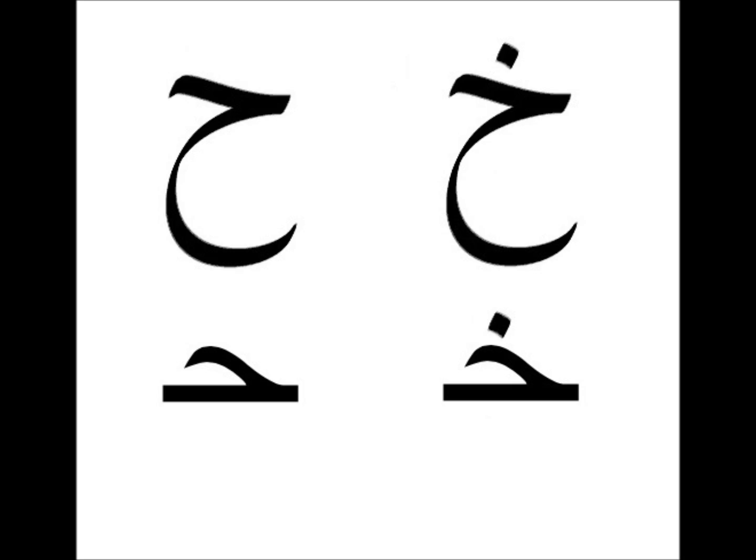So you think you're ready for two letters at once? Again? Well, here they are anyway. Look familiar? These letters look identical to Gim you learned earlier, except for the dot placement. These letters are called Ha and Kha. Ha looks just like the Gim, except the dot is absent, while the Kha has the dot placed above. Both of these letters follow the same mighty morphine rules as the Gim.